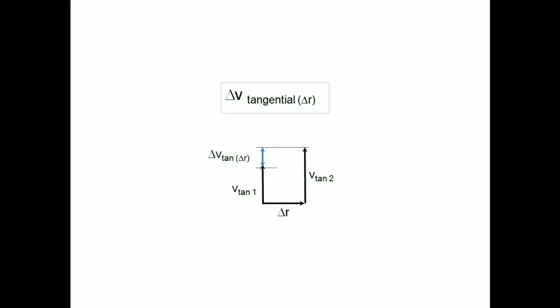Let's examine the change in tangential velocity, or delta v sub-tangential. We will assume the direction of the vectors at points 1 and 2 are parallel, for a small angle delta theta. The change in the tangential velocity will be the difference in the length of the vectors.